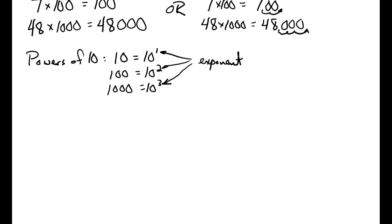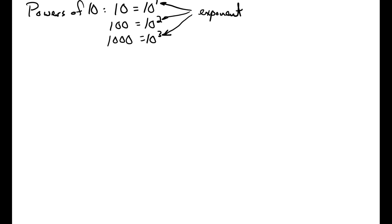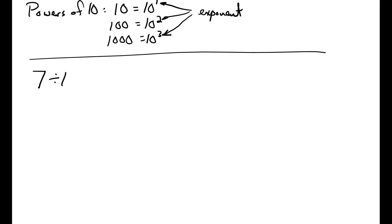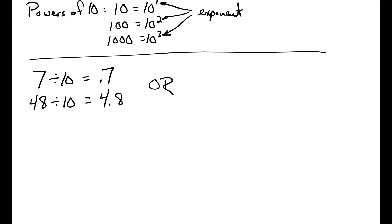It turns out we can use this same approach when dividing by powers of 10 — we just move our decimal point in the other direction, to the left. For example, 7 divided by 10 is equal to 7 tenths, and 48 divided by 10 is equal to 4.8. In order to divide a number by 10, you move the decimal point one place to the left. To divide by 100, move the decimal point two places to the left, and so on.